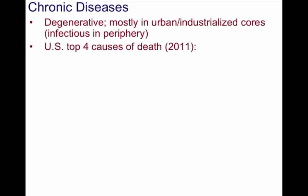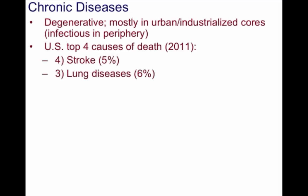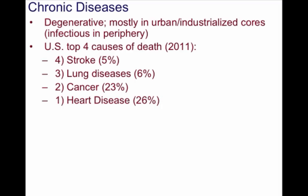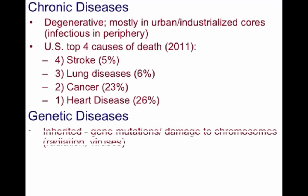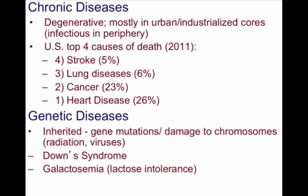Looking at the United States, the top four causes of death more recently: number four was stroke, number three was lung diseases, number two was cancer, and number one was heart disease — all examples of chronic diseases. And then there are genetic diseases, which are inherited or due to gene mutations or damage to chromosomes. This can happen due to radiation or viruses that affect a fetus while it is developing, which is why anyone with chickenpox is supposed to stay far away from pregnant women. One well-known example is Down syndrome, which occurs because of an extra chromosome.